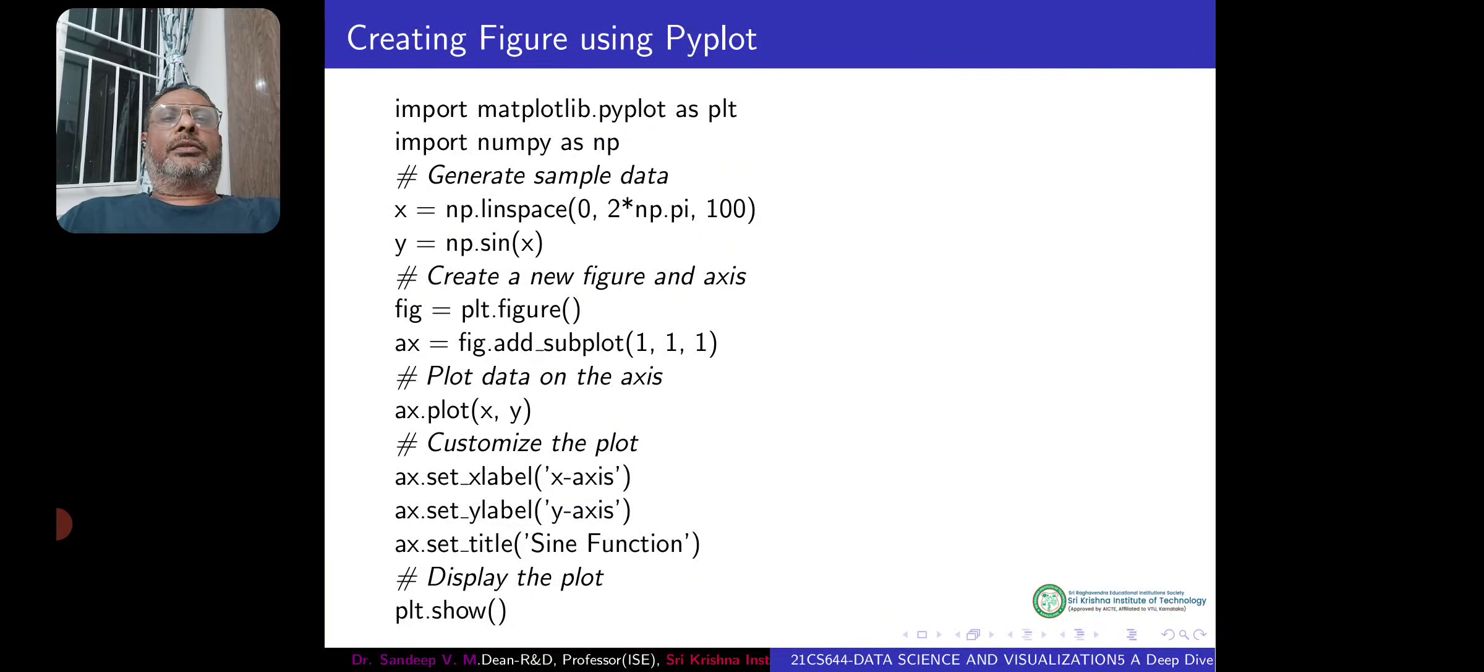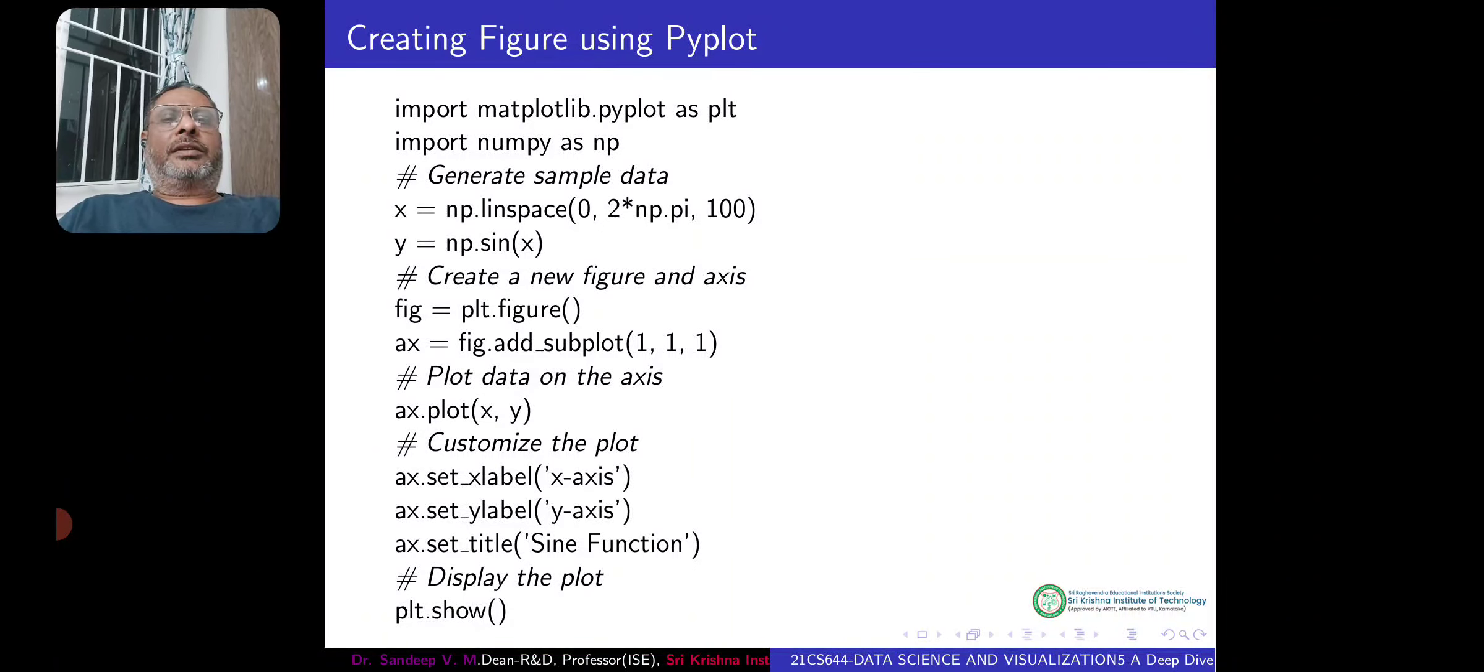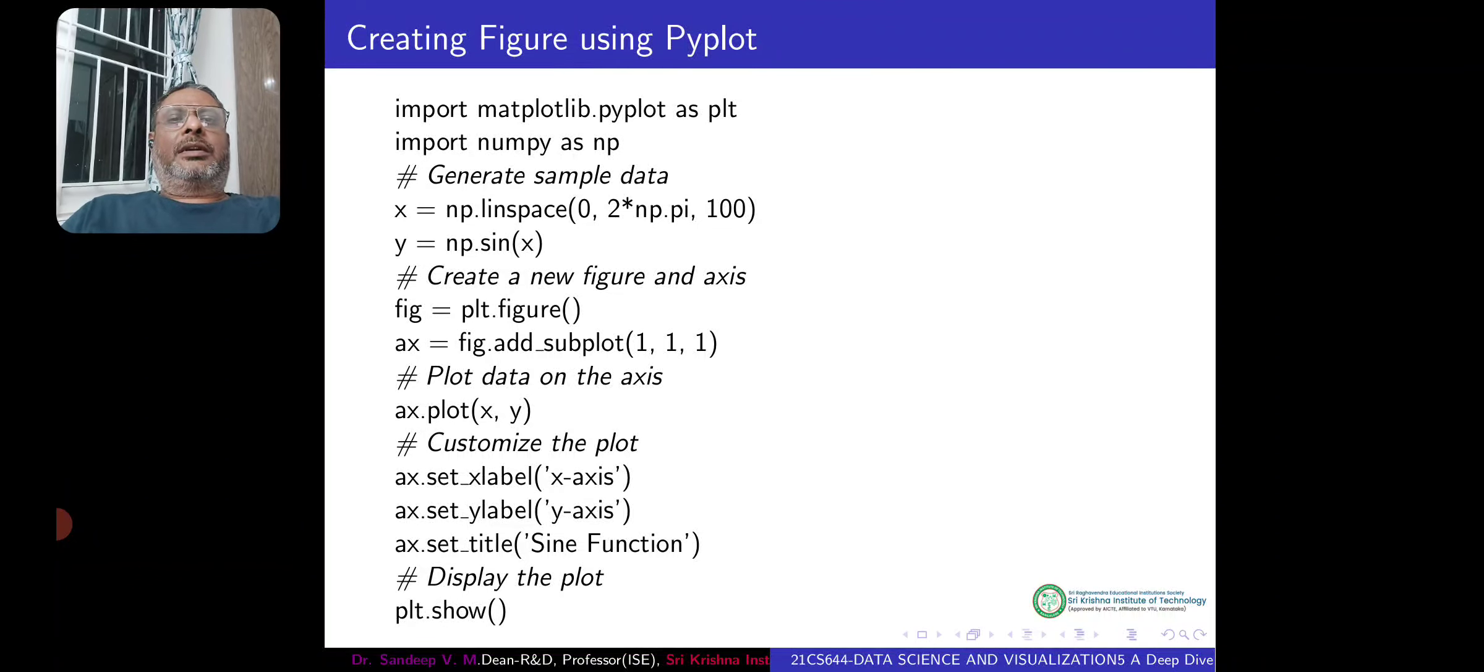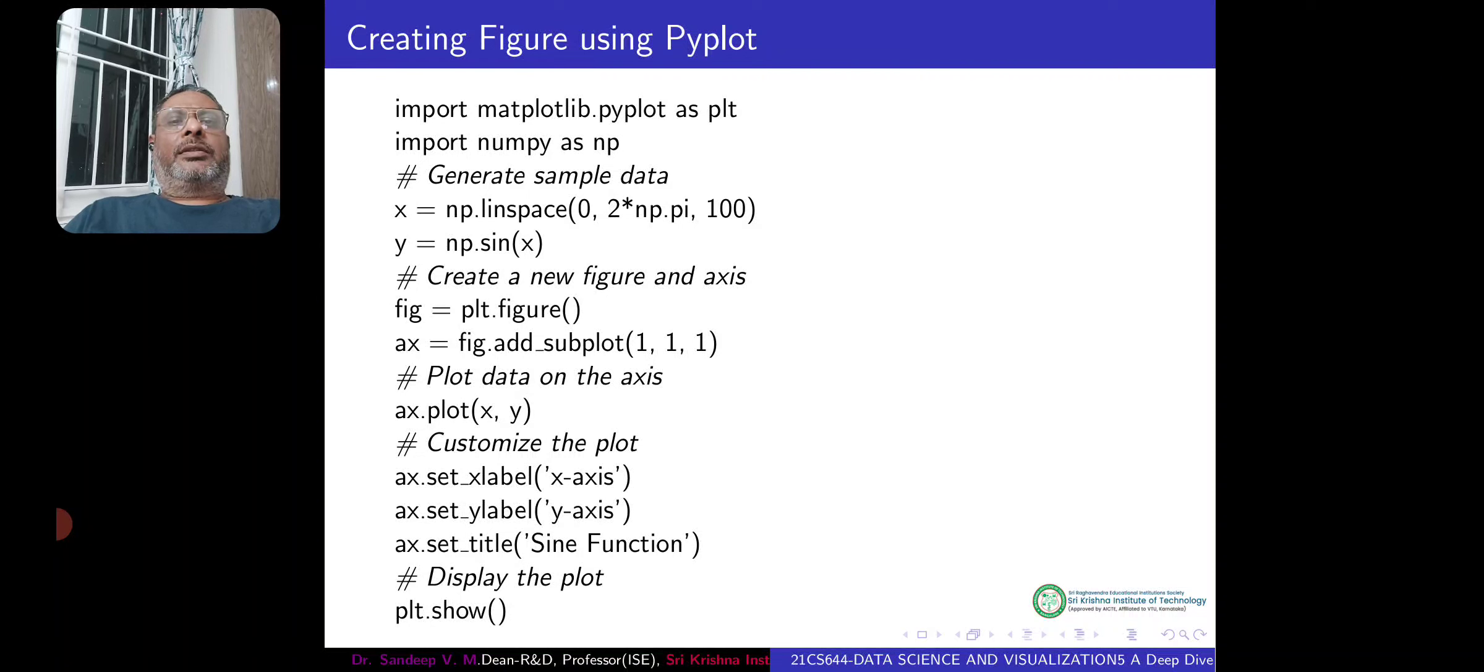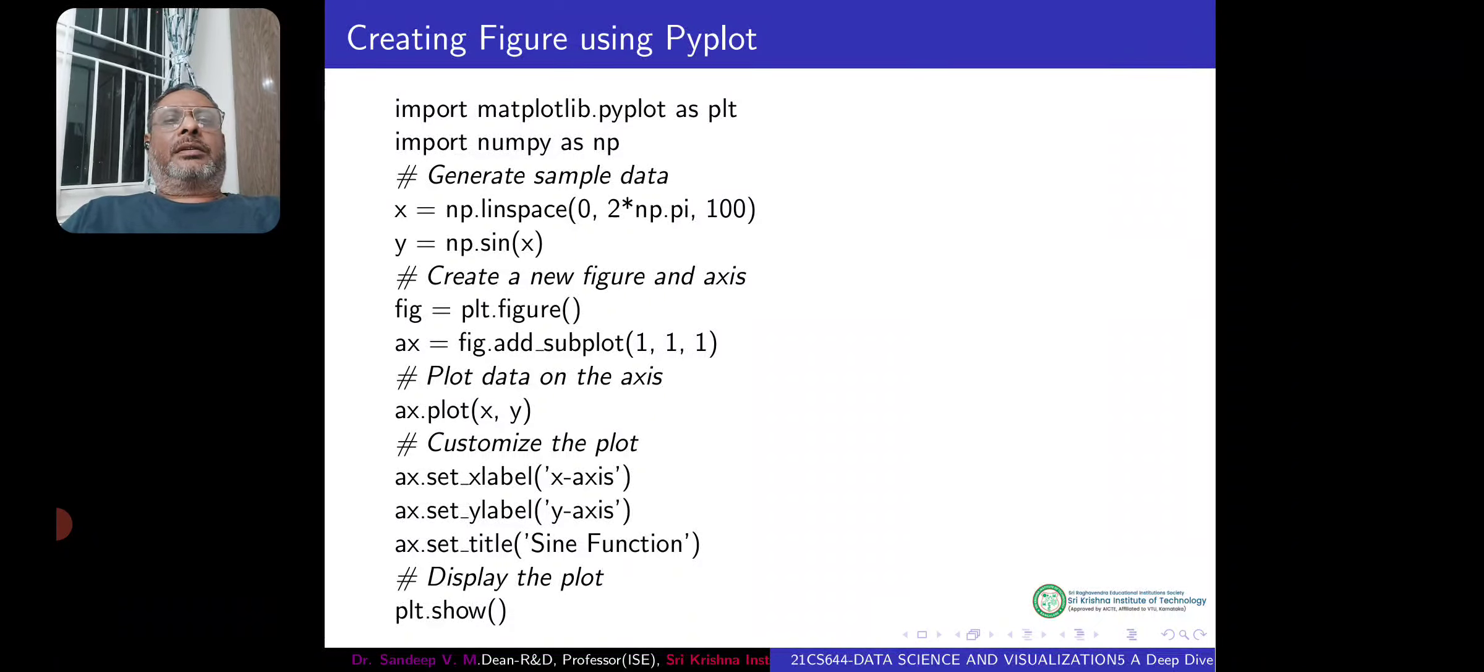Here we are importing two libraries: Matplotlib library and its module PyPlot as plt and NumPy as np. Then we generate the sample data: x-axis 0 to 2 pi, 500 values, and y-value is sine of x. Then we create a new figure using the PyPlot function plt.figure, and to that we add an axis. So here we are adding subplot 1 by 1, that means we just want to have the whole figure having a single plot.